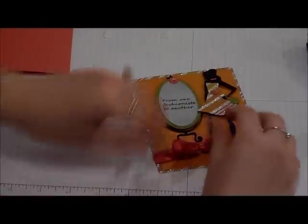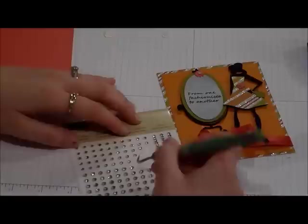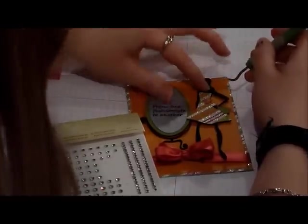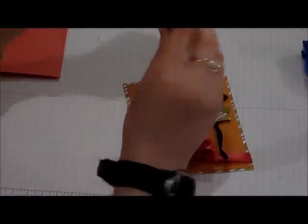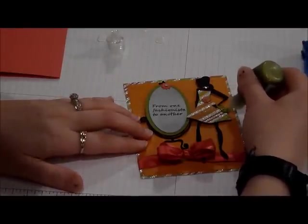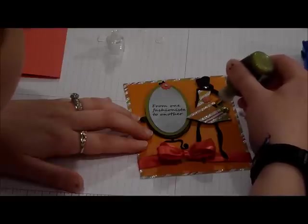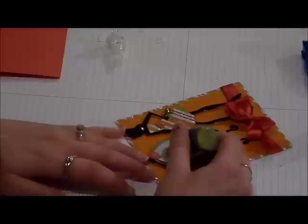Now the next thing that I'm going to do is take a rhinestone. These are from Stampin' Up. And I'm going to take and I'm going to put one on her little necklace. Right in the middle. Give her some extra bling. And then I'm going to take the lime green stickles and I'm going to cover her purse.